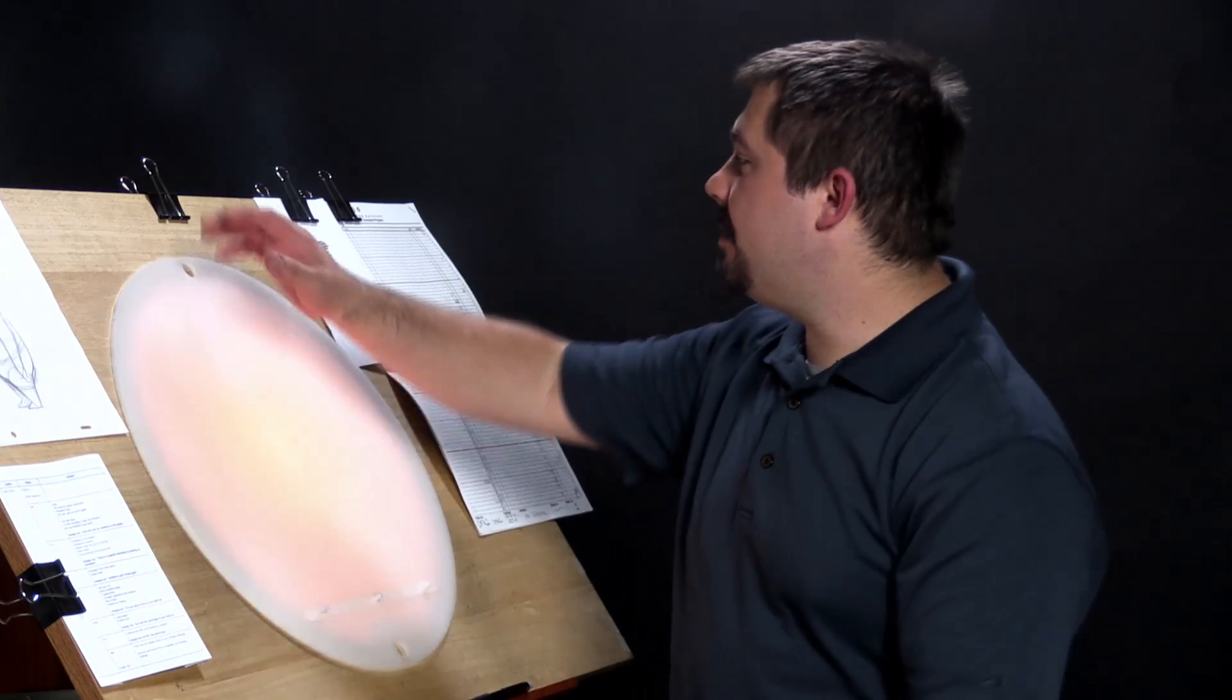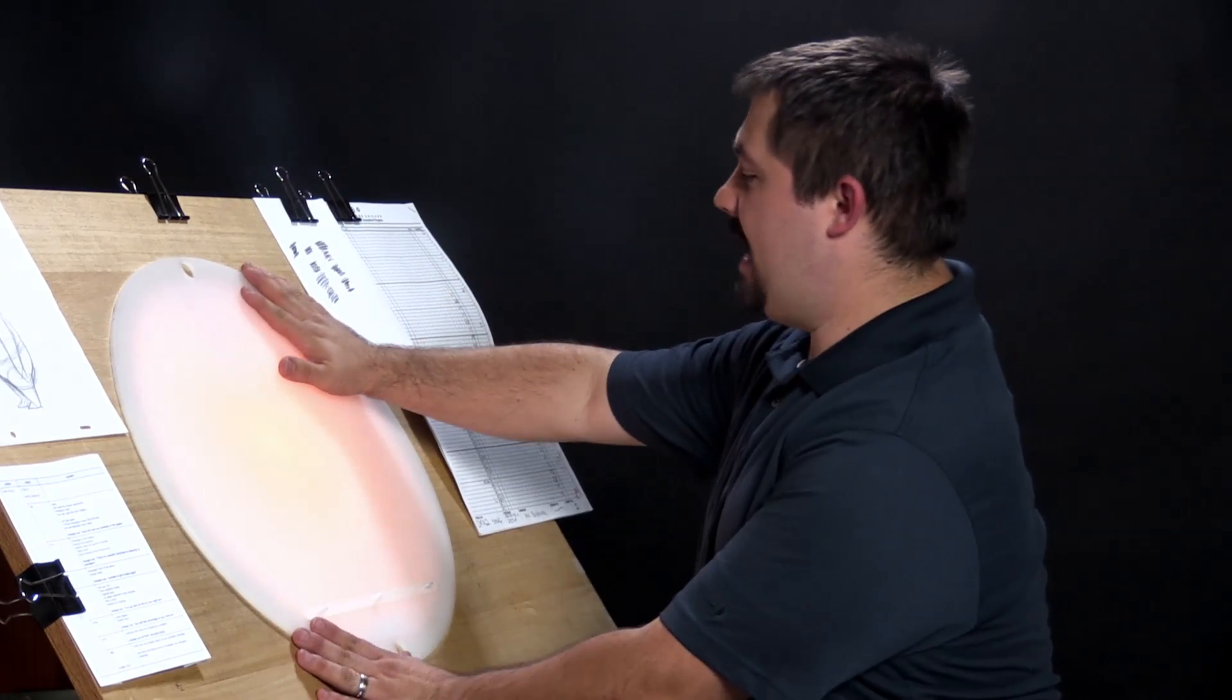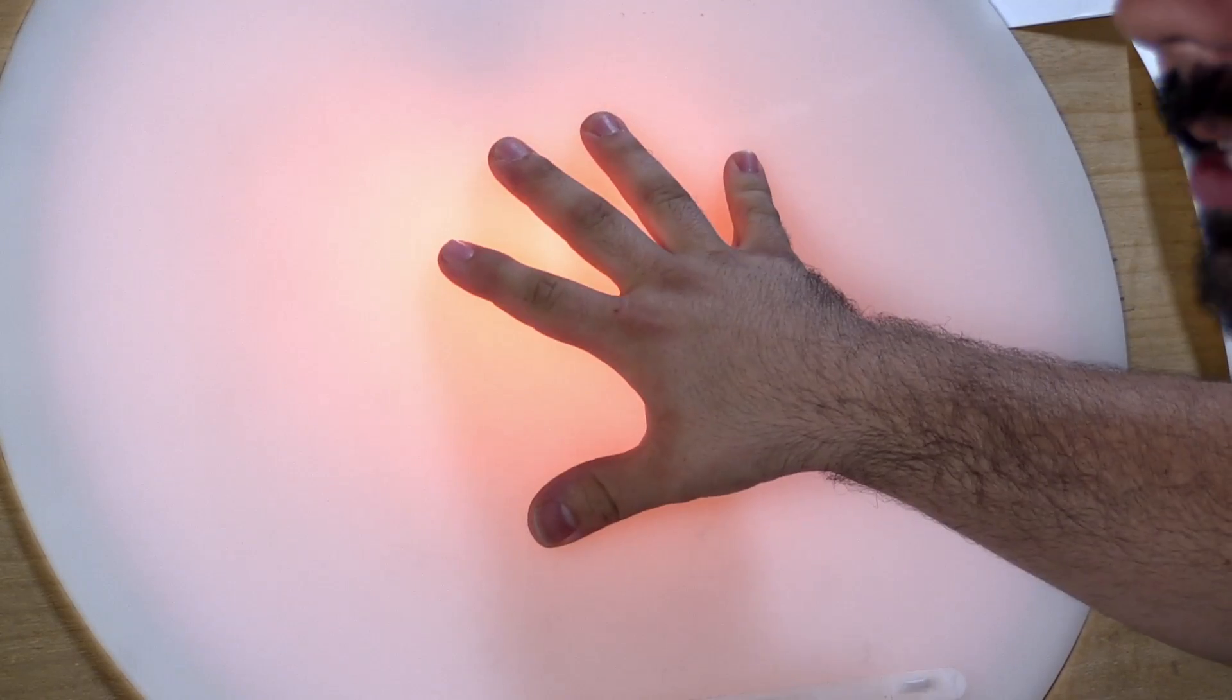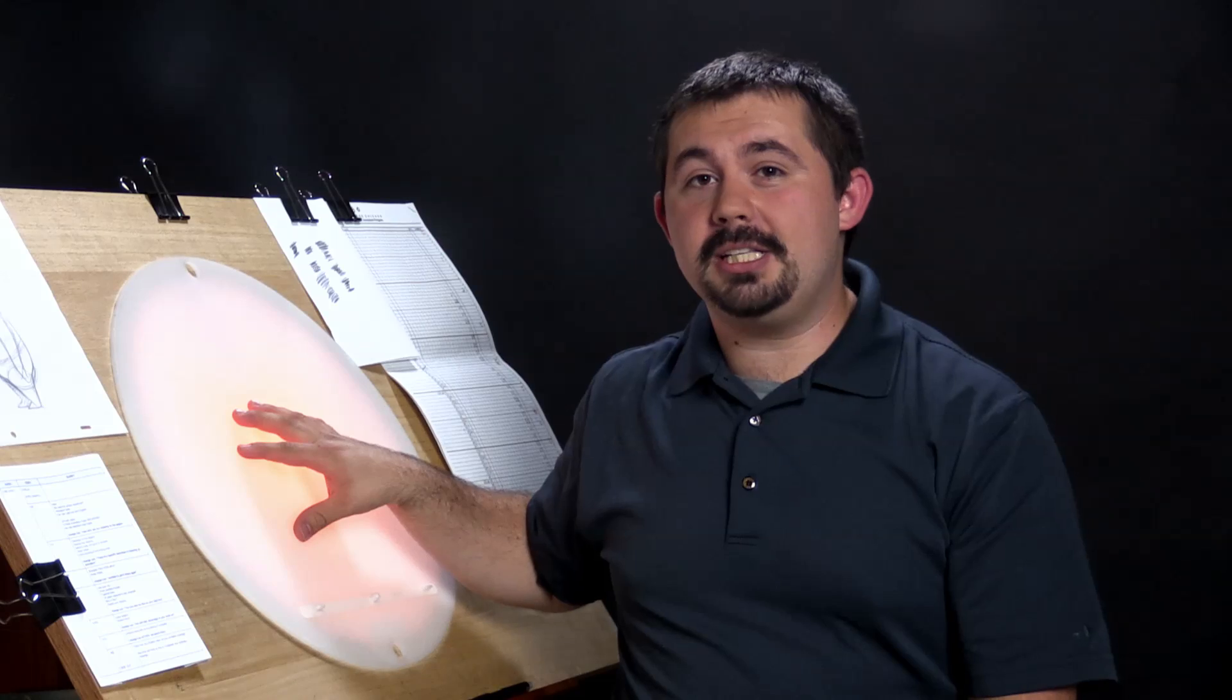So first, let's take a look at the kind of equipment we need to do animation cleanup. I have here my animation desk. I have an animation disk in the center and it is backlit. That is ideal for doing animation cleanup.